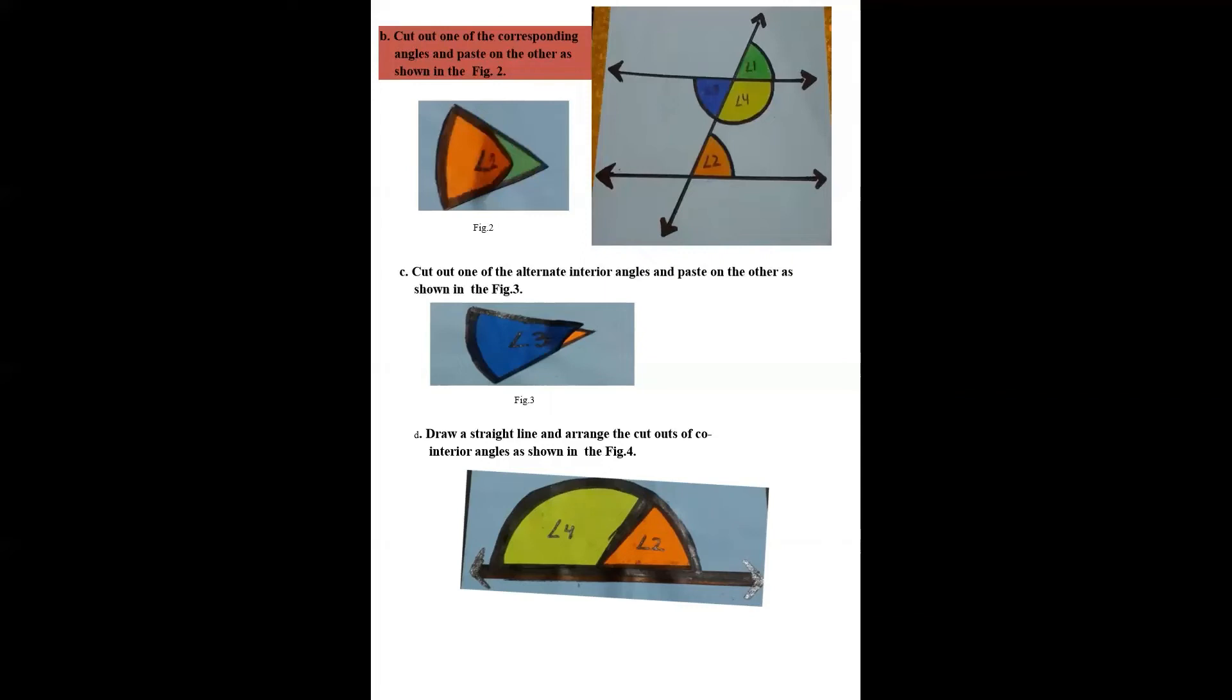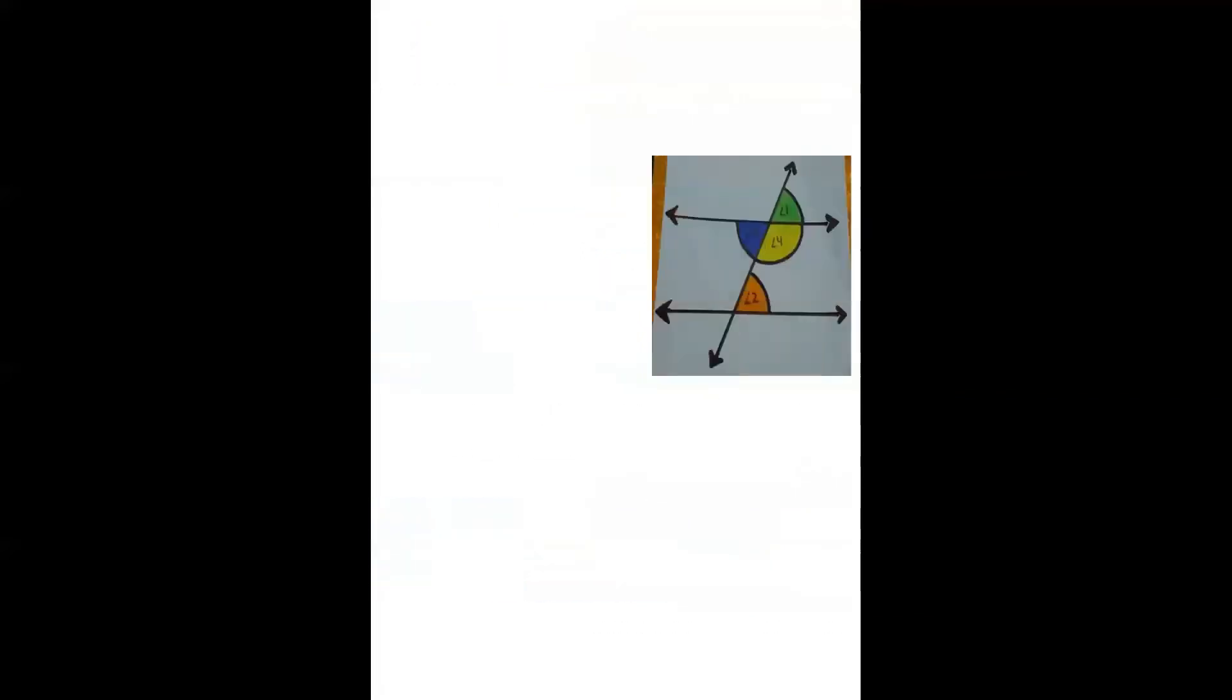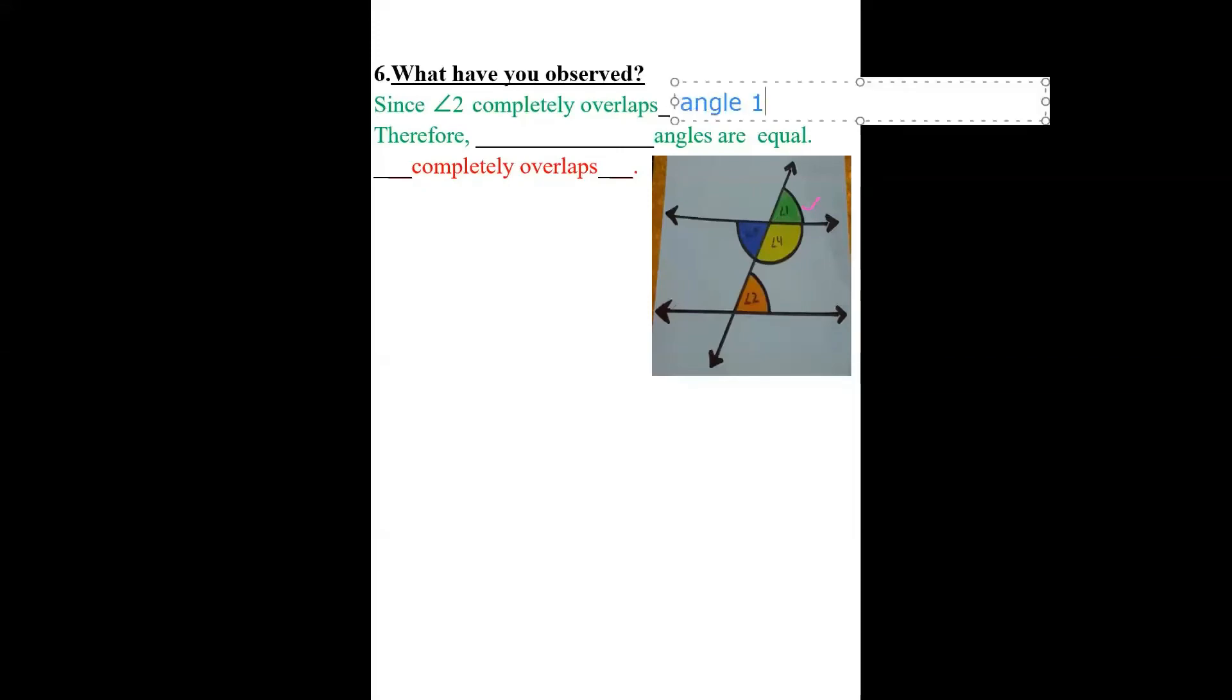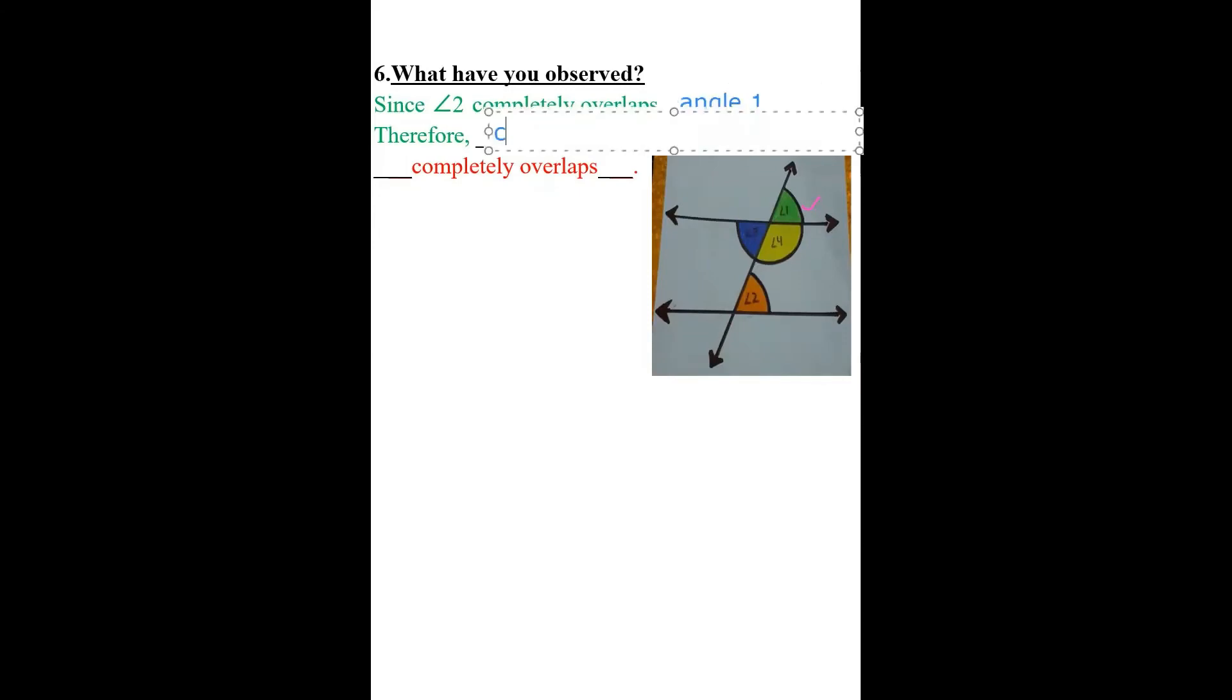Observing these things, what we can say here from this figure, what observations we did. Angle 2 completely overlaps this angle number 1. Angle 2 completely overlaps angle 1. Therefore, we can say corresponding angles are equal.